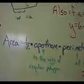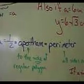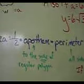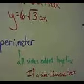Let's look at what we know. The area is going to be equal to 1 half multiplied by the apothem multiplied by the perimeter. Remember that the apothem is the piece that goes to the side of the regular polygon at a 90 degree angle. The perimeter is all of the sides added together.